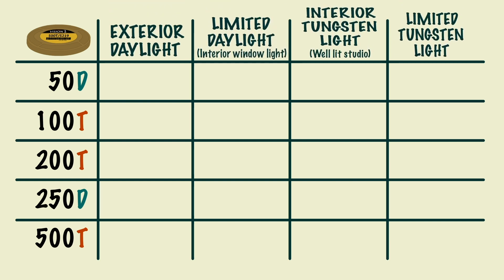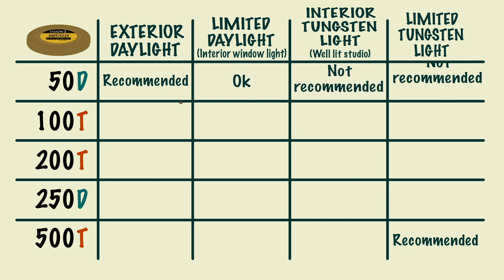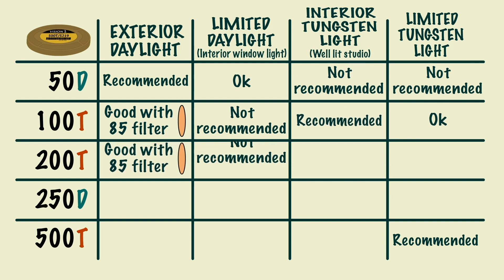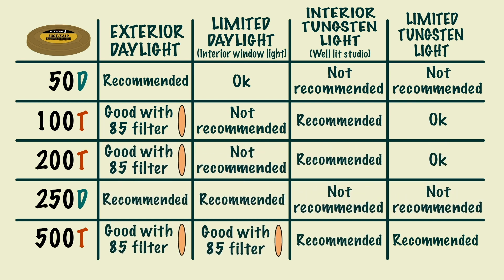For example, if you were inside shooting with limited lighting, the recommended stock would be 500T. If you were filming an exterior daytime scene, the recommended stock would be 50D. Of course, these are only what's recommended on paper, and all settings will be different — it's up to the cinematographer to choose what's right for them.